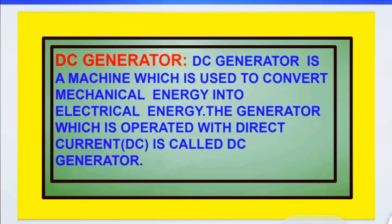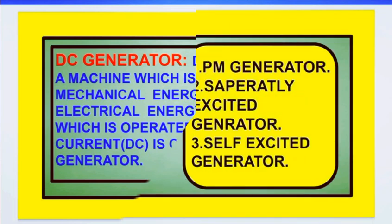Next, DC generator. What is a DC generator? A DC generator is a machine which is used to convert mechanical energy into electrical energy. The generator which is operated with direct current is called a DC generator.